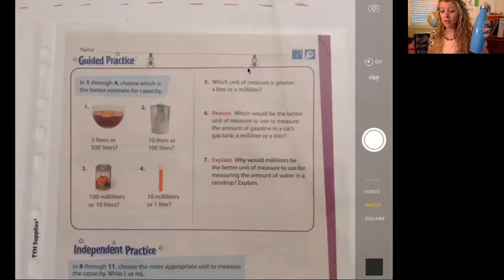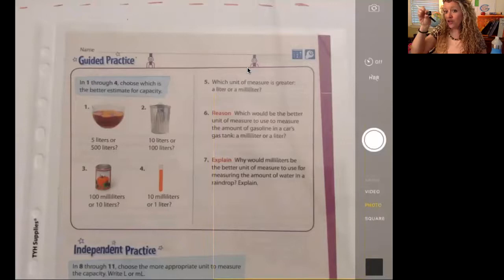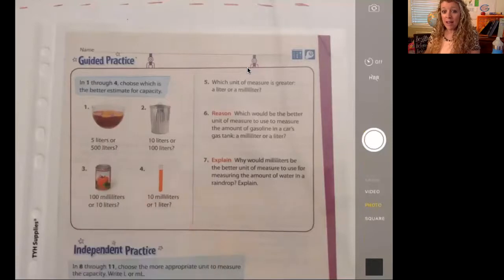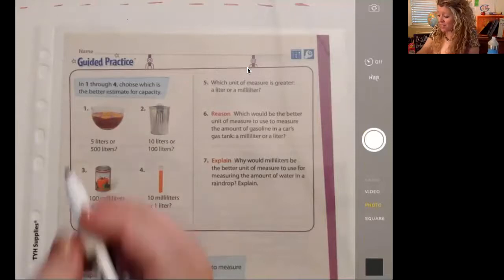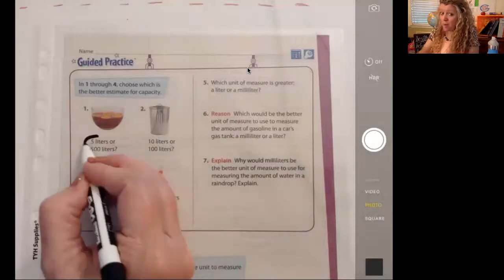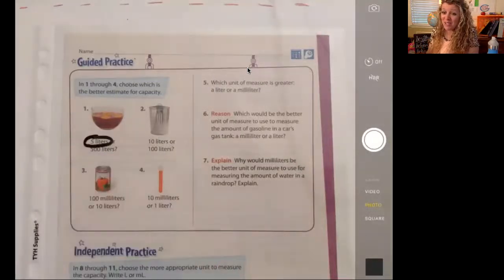So let's picture our things. Let's picture our water bottle for a liter. Let's picture our little dropper for a milliliter and let's think. This punch bowl here would it hold five liters or would it hold 500 liters? Would it hold about five water bottles or 500 water bottles? What do you think? Say it out loud. You're right it would hold five liters. It wouldn't hold 500 of these water bottles. That would be a whole lot of punch wouldn't it?